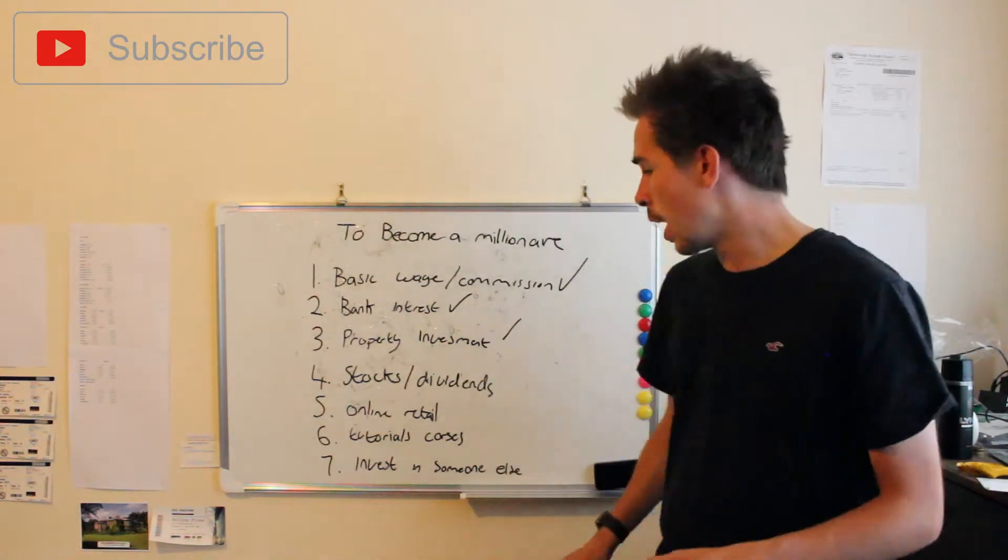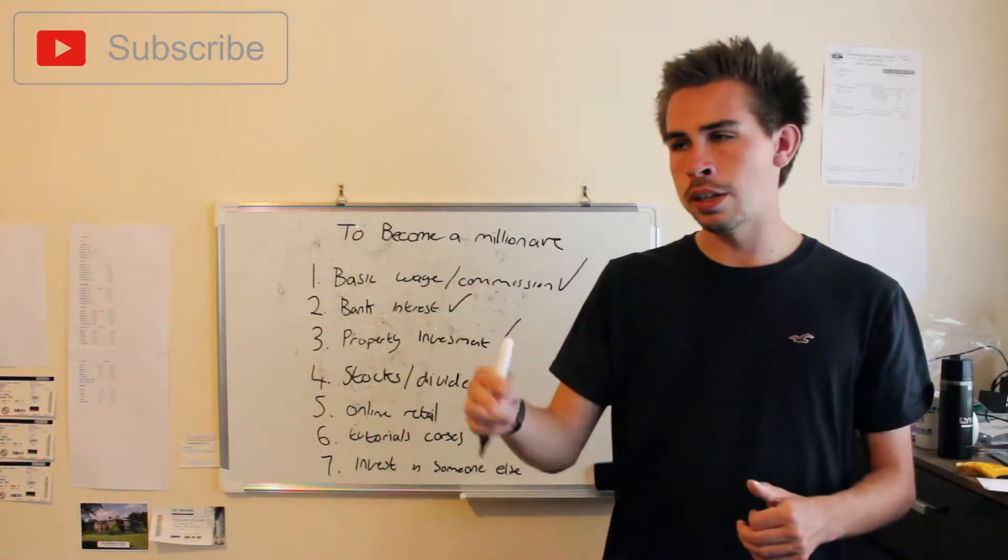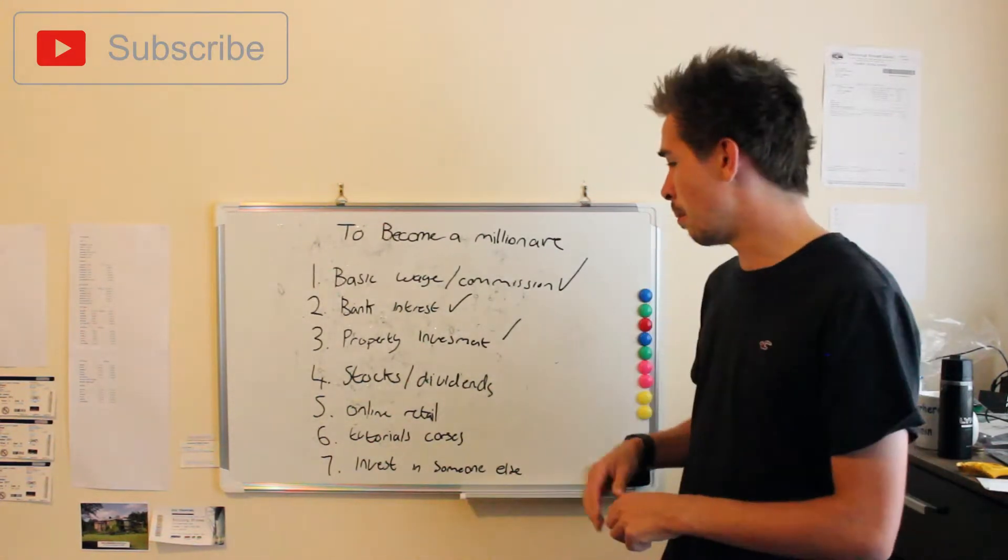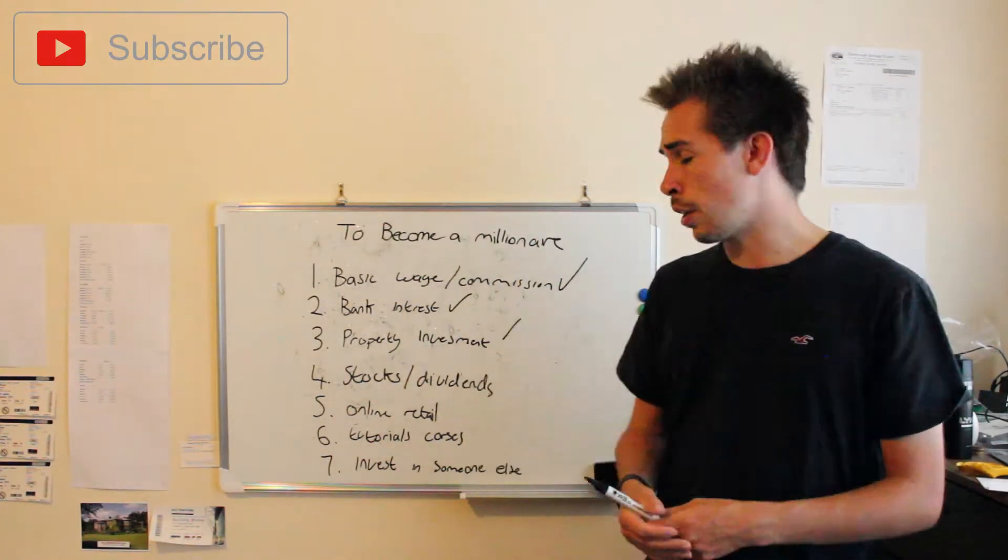Which I currently have done. I currently own two properties. Technically, I own three, but I don't count the third one because I live in that one. So I own two properties that I currently rent out.